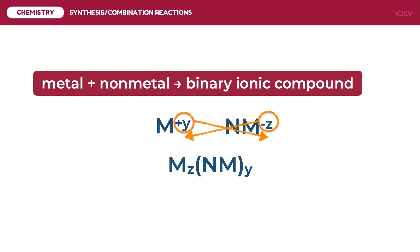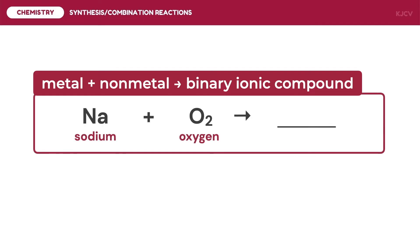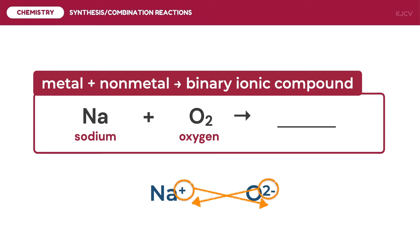For the reaction of sodium and oxygen: sodium is a metal belonging to group 1A, having a charge of positive 1 as a cation. Oxygen is a non-metal belonging to group 6A, having a charge of negative 2 as an anion. Doing a crisscross of charges, we get Na₂O, or sodium oxide.